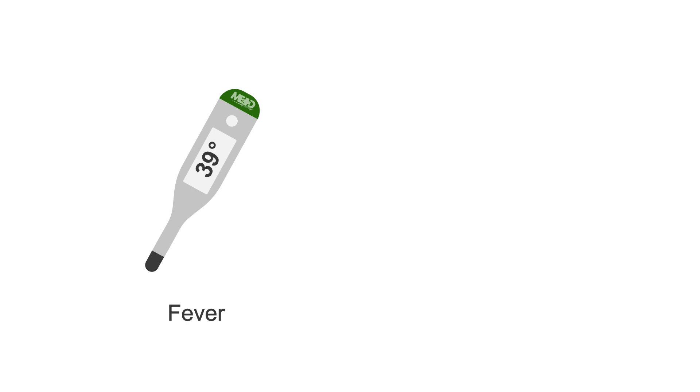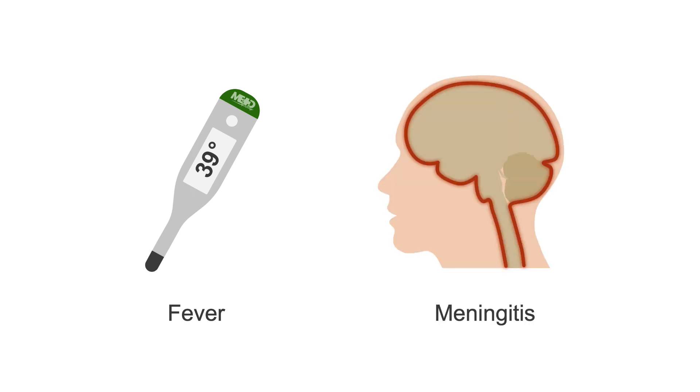An elevated body temperature can be associated with systemic illness. For example, an infection like meningitis can produce a headache.